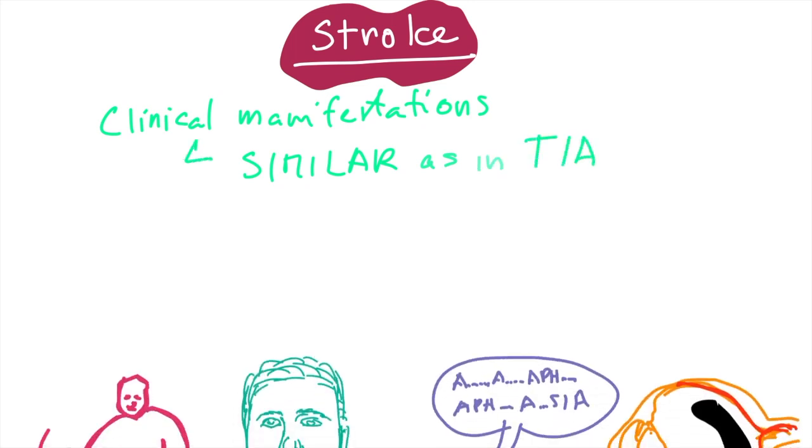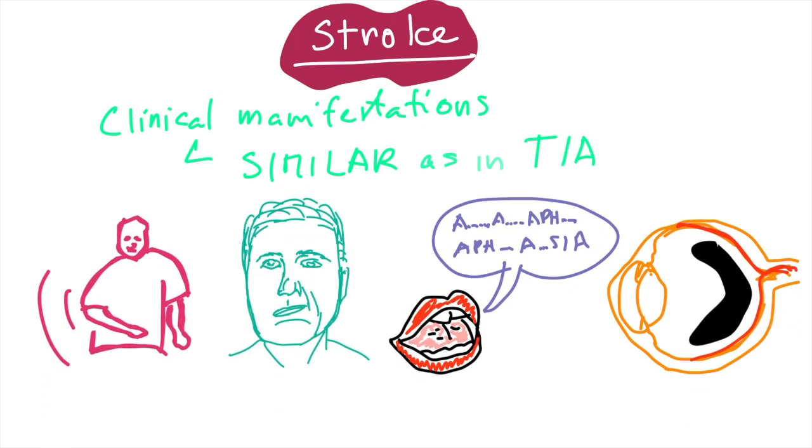Well, and with stroke the clinical manifestations can start in a very similar fashion as transitory ischemic attacks. So again it could start for example as one-sided hand weakness, or one-sided facial weakness, aphasia, or blindness.